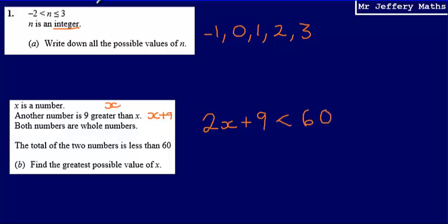So I've set up an inequality and all that's left for me to do is solve this. Subtracting 9 from both sides will leave me with 2x is less than 51. Which means that, dividing both sides by 2, x is less than 25.5.